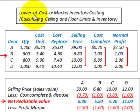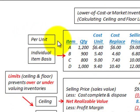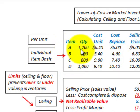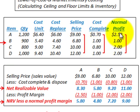We're going to be going through an example looking at lower of cost or market inventory costing. We'll be concentrating on calculating the ceiling and floor limits and also the inventory values. Our problem is on a per unit cost basis, looking at it on an individual item basis. We'll be given a quantity, cost per unit (the original cost), replacement cost, selling price, cost to complete these units, and a normal profit margin on a per unit basis.